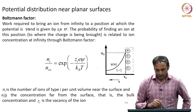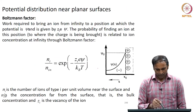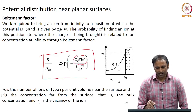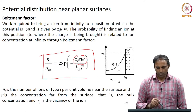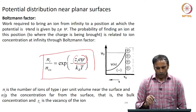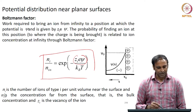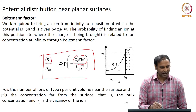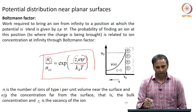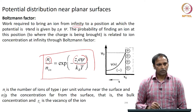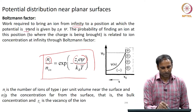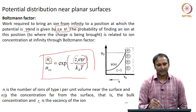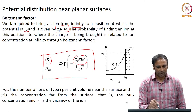In this Boltzmann factor, the quantity zi·e·ψ tells you the work that has to be done to bring a specific ion of type i from infinity to a position where the potential is ψ. That work is given by zi × e × ψ.